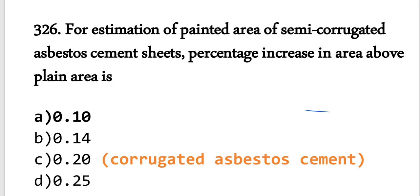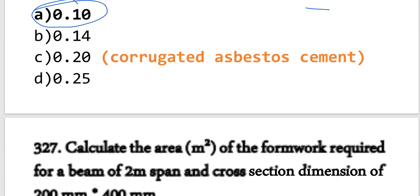For fully corrugated asbestos cement sheets, the percentage increase in area is 0.20. So that is question 326.